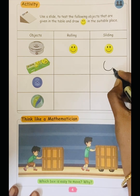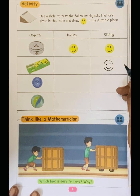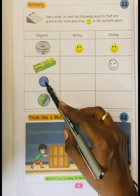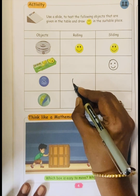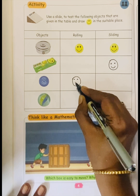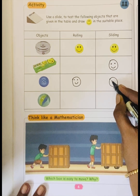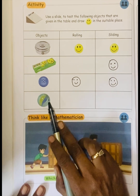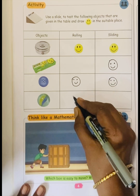We have to draw a smiley. Next one: button. Buttons are flat and curved — round. It will roll as well as slide: rolling and sliding. Next one: marbles. Marbles are round — rolling and sliding.